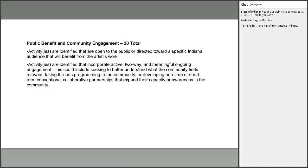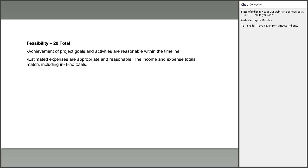Public benefit and community engagement means having activities that are open to the public or directed toward a specific audience in Indiana that will benefit from your work. You should also explain how your activities incorporate active, two-way, and meaningful ongoing engagement — this could include seeking to understand what the community finds relevant, taking arts programming to the community, developing collaborative partnerships that expand your capacity as an artist, or making the community more aware of who you are.